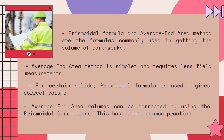Prismoidal formula and average end area method are the formulas commonly used for earthwork volumes. The average end area method is simpler and requires less field measurements, so it is usually the formula used. But for certain solids where volume is overestimated, the prismoidal formula gives more accurate values. Average end area volumes can be corrected using prismoidal corrections, and this combination has become common practice.